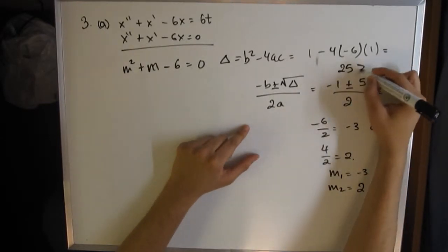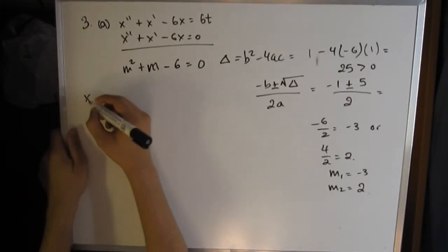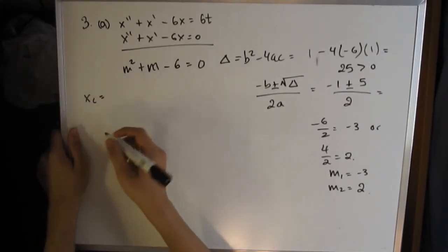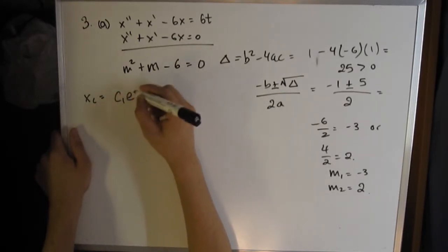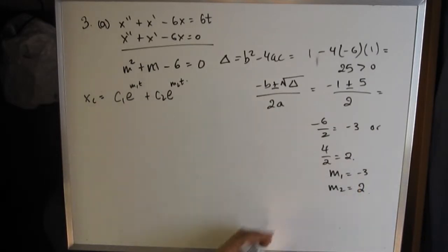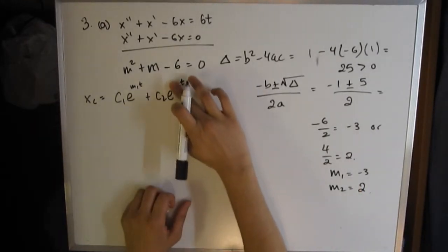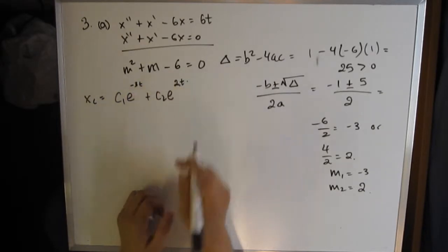The complementary equation is equal to c₁e^(m₁t) + c₂e^(m₂t). We found m₁ and m₂, so we can substitute that in, which is basically c₁e^(-3t) + c₂e^(2t). That's the basic part, stuff we learned previously.